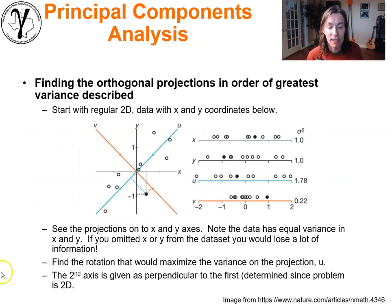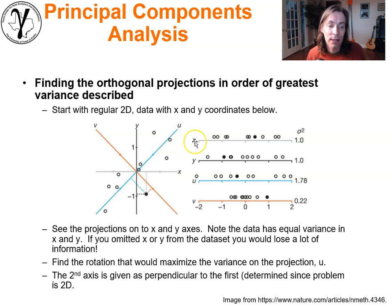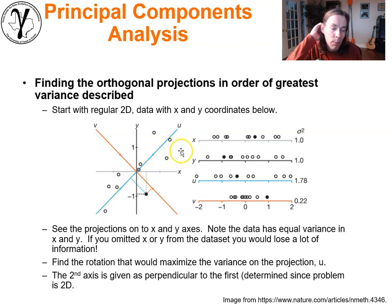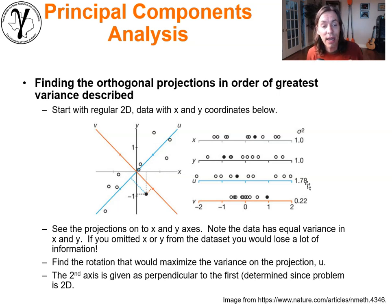Here's a nice example of principal components in 2D. We have original data with features x and y. If we project onto a new orientation u, the variance described is 1.78 — much more than projecting on x or y alone. That's dimensionality reduction using principal components — retaining just one feature, we've captured 1.78 out of total variance of 2.0 in both dimensions.